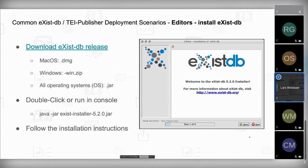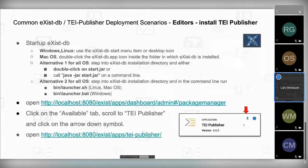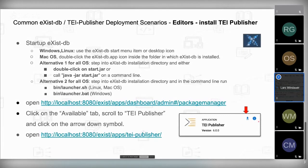Once installed, Windows and Linux users will have an eXist-DB entry in the start menu and a desktop icon, if that option was selected during installation. On Mac OS, if you didn't change anything, you'll find it in /Applications/eXist-DB and can simply double-click it there.